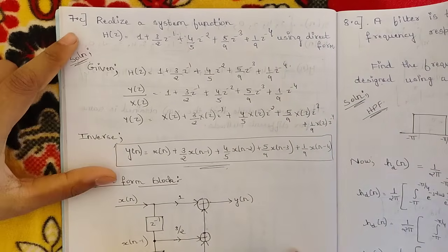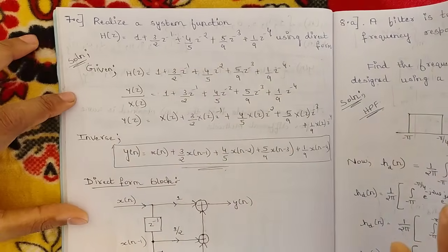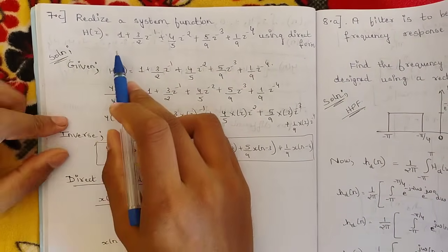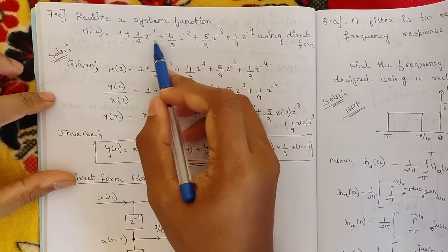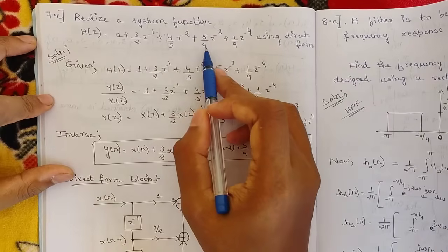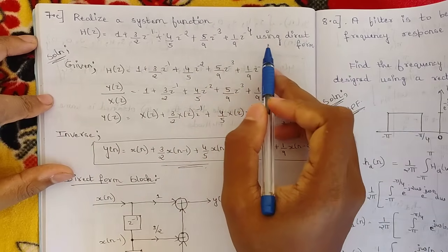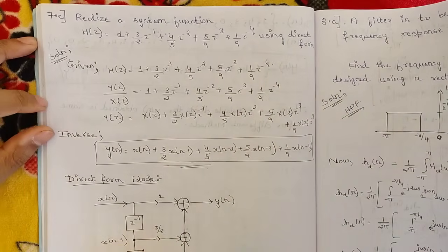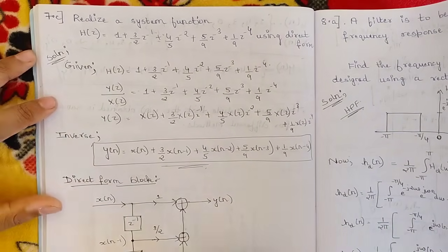This is question 7c: realize a system function where the transfer function is given as 1 plus 3/2 z-inverse plus 4/5 z to the power minus 2 plus 5/9 z to the power minus 3 plus 1/9 z to the power minus 4, using the direct form method.